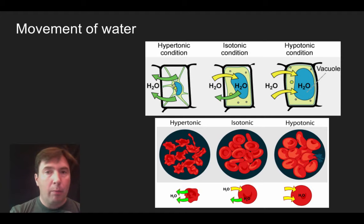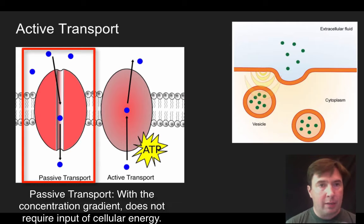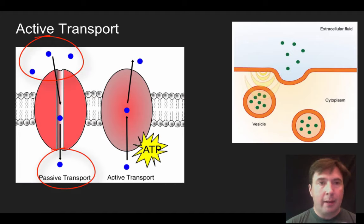So those are all movements of water. Now, when we talk about other transport, we can talk about the movement of material against the concentration gradient. So let's start over here on our left and look at our passive transport that we started with, like we were talking about with water and osmosis. So if you got more material outside the cell and less material on the inside of the cell, it can move from area of high concentration to low concentration. That's passive transport we see over on the left.